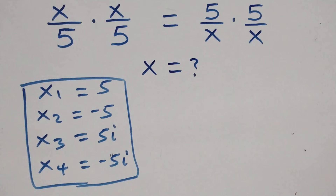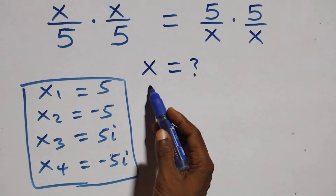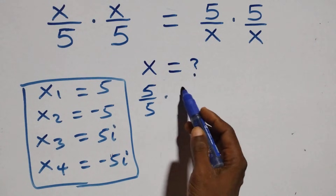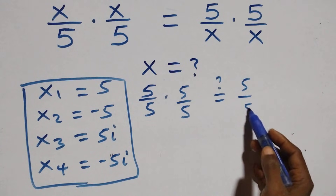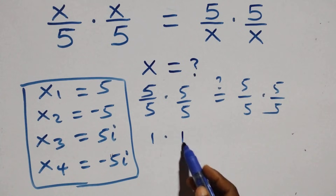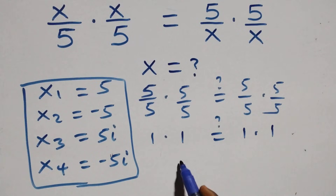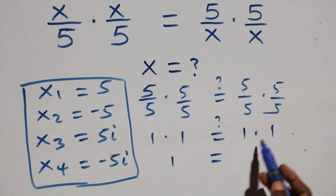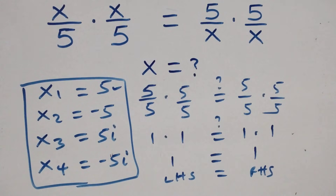We can check if these satisfy the given equation. Substituting x equals 5: the equation becomes 5/5 times 5/5, which equals 5/5 times 5/5. That is 1 times 1 equals 1 times 1, giving 1 = 1. Left hand side equals right hand side, so x equals 5 satisfies the given problem.